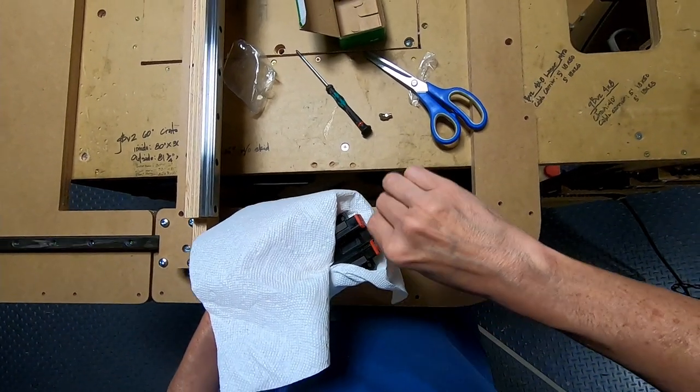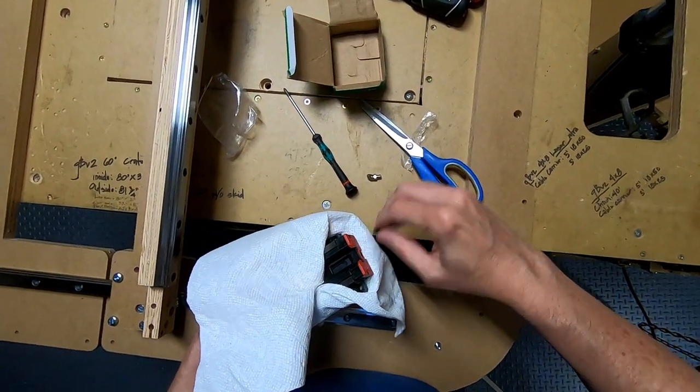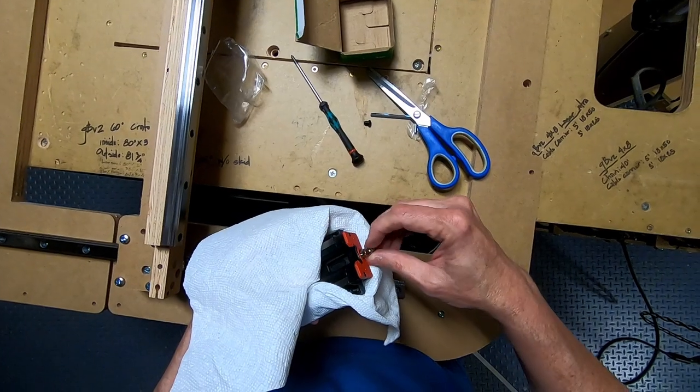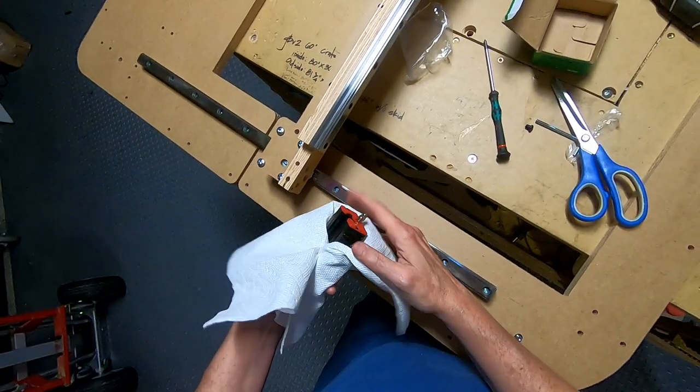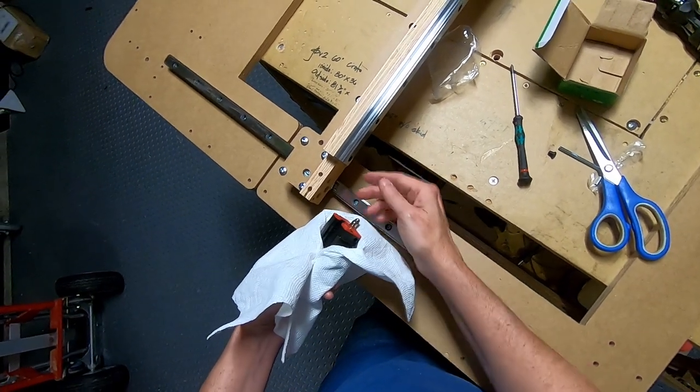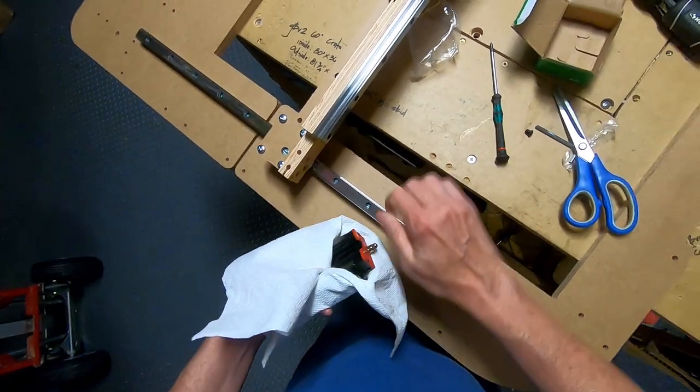Take off this screw so we can put on the Zerk fitting, and I'm going to install the bearing block in an orientation so the Zerk fitting is on this side, not on that side.